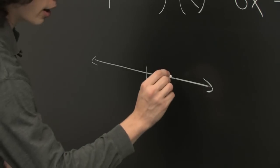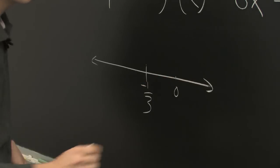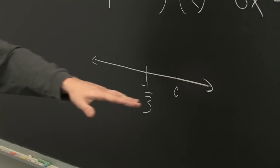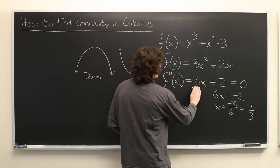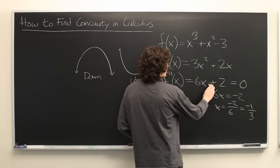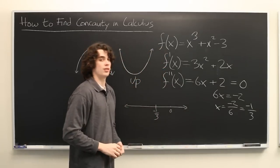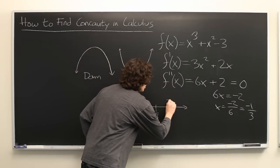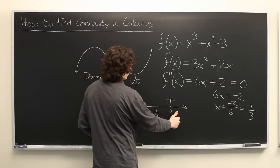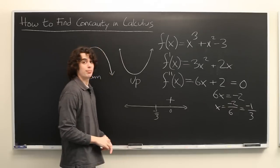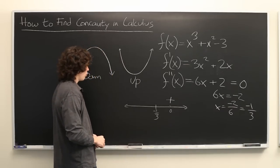So let's go ahead and try x equals 0. What do we get when we plug that into f double prime of x? Well, 6 times 0 is 0 plus 2 is positive 2. So we know that to the right of negative 1 third, f double prime of x is positive.